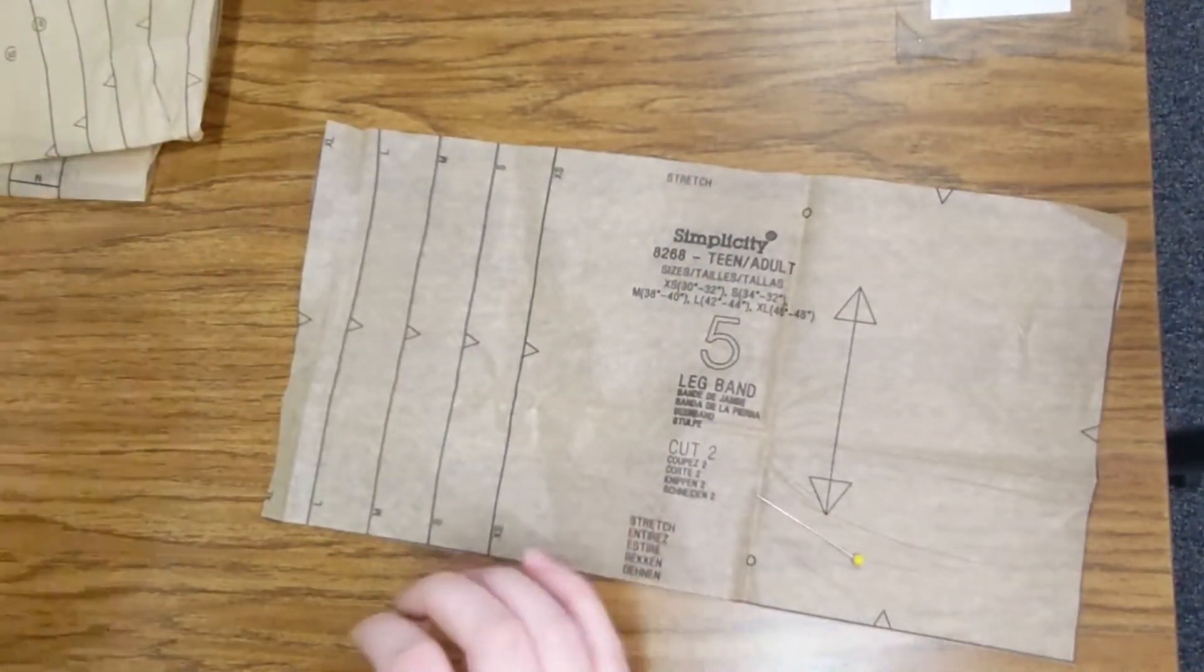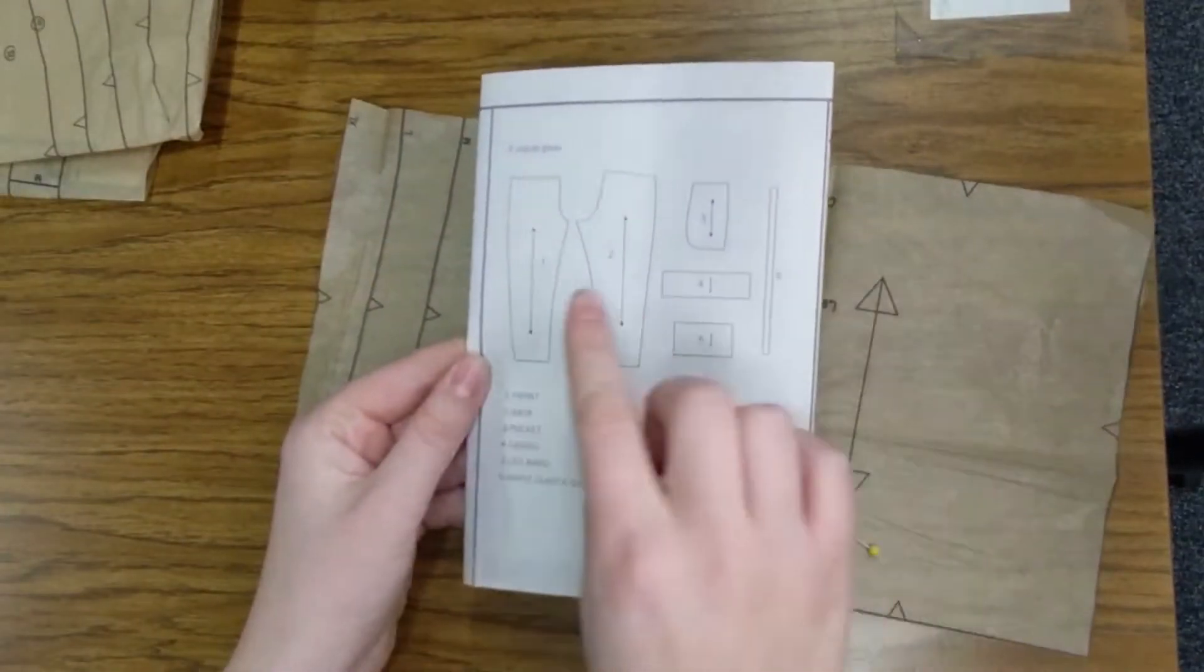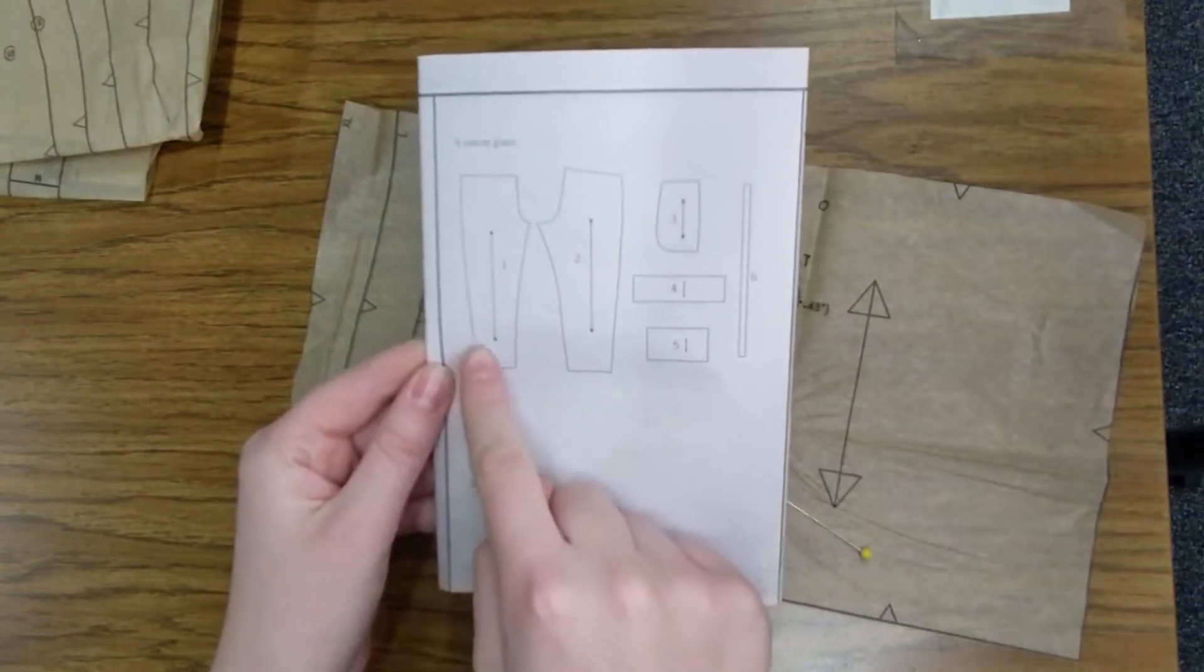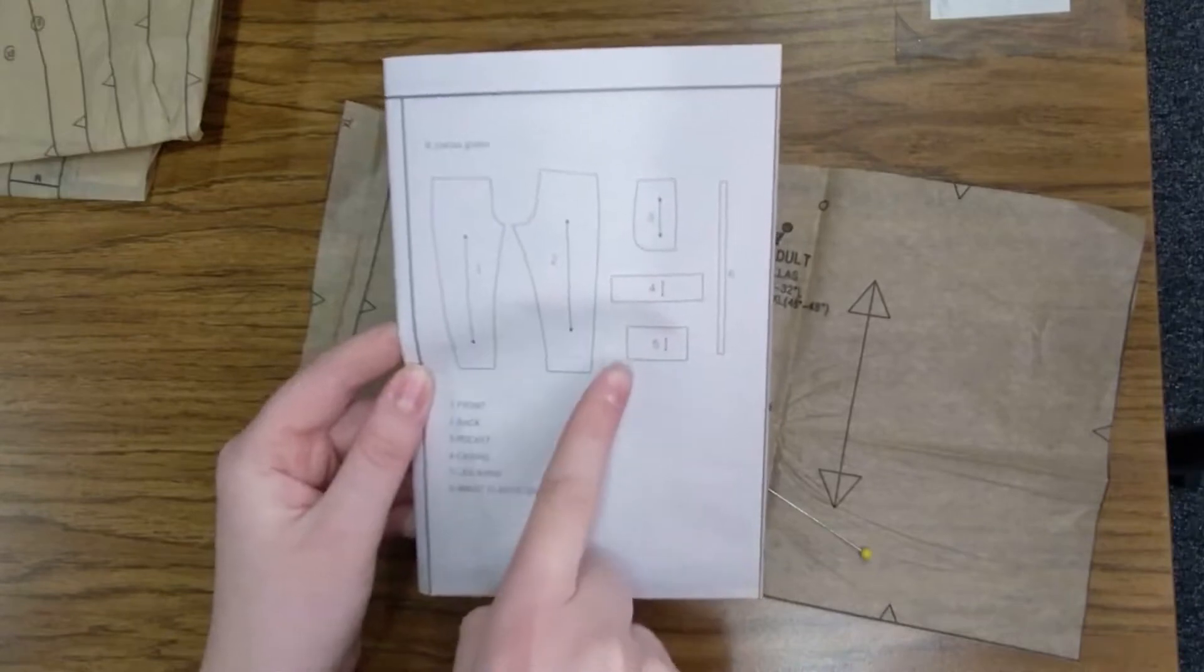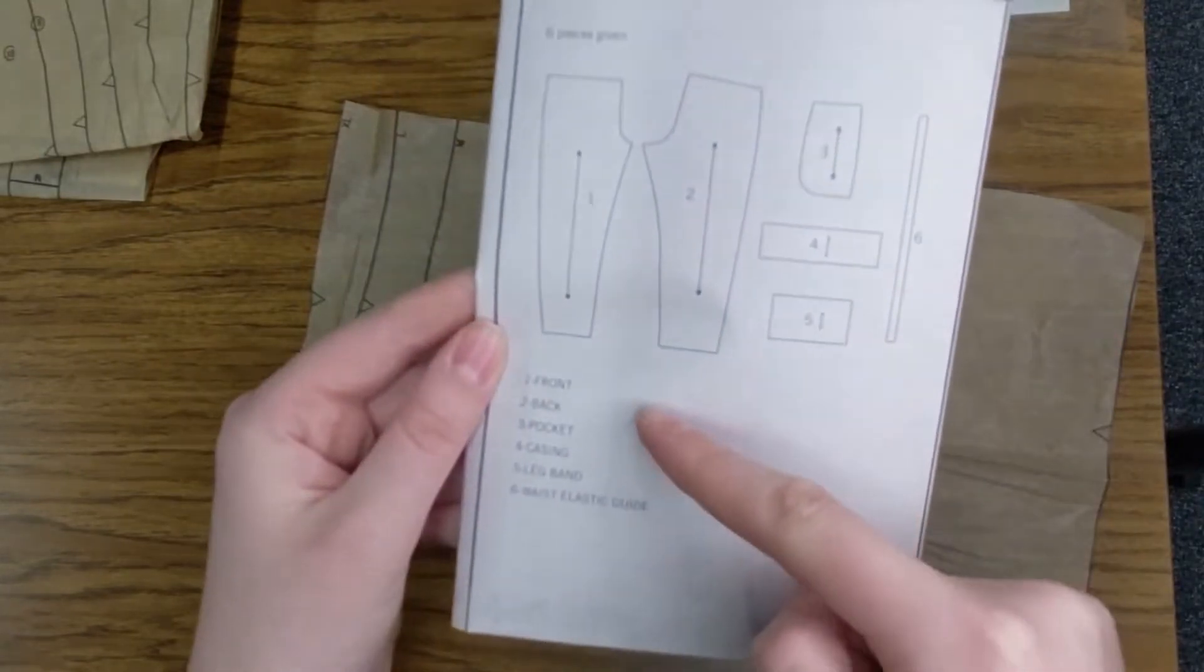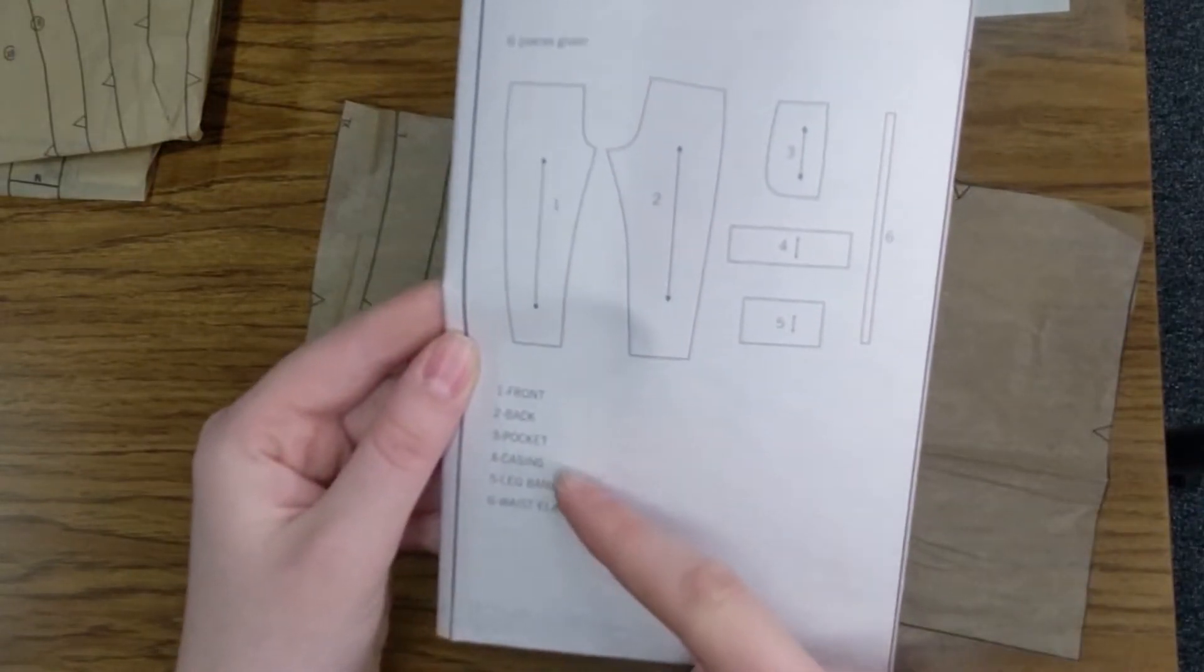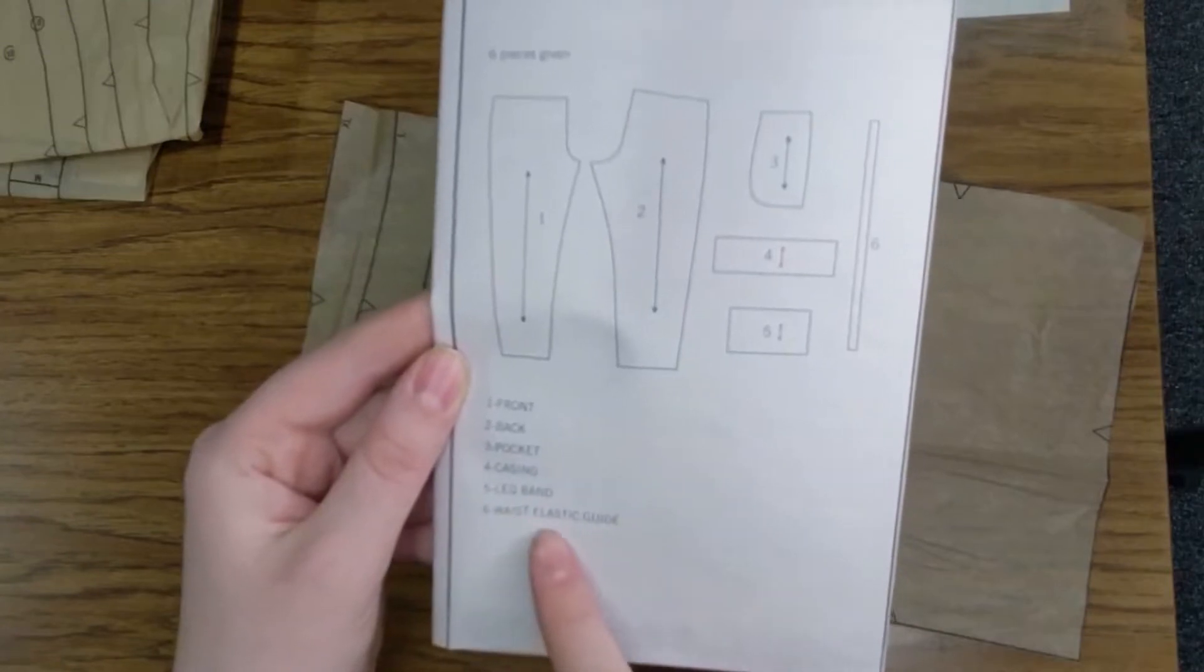You can look in your pattern guide sheet. There is a page or a little section of it that tells you how many pattern pieces there are. So, you should have a one, two, three, four, five, and six, and it tells you what each of those are. So, we have a front, back, pocket, casing, leg band, and waist elastic guide.